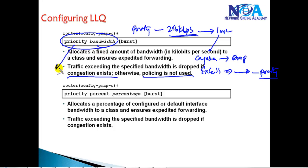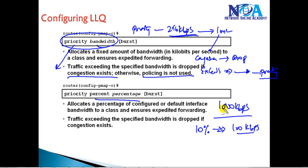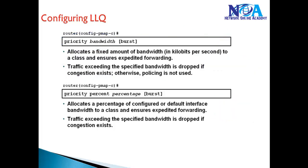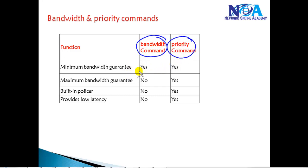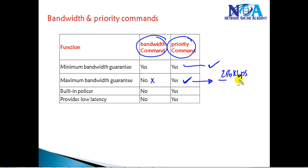We can define the priority either as a specific bandwidth amount or as a percentage. For example, with 1000 kbps interface bandwidth, defining 10% priority traffic gives 100 kbps. The major difference between bandwidth and priority commands: in class-based weighted fair queuing we use the bandwidth command, whereas for priority we use the priority command. In both cases a minimum bandwidth is guaranteed. With the bandwidth command there is no maximum bandwidth cap, so traffic can use excess bandwidth. With priority, the defined value — for example 256 kbps — is the maximum during congestion, and anything excess is dropped.